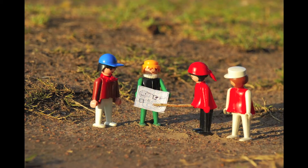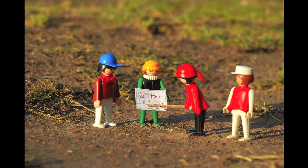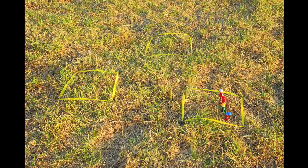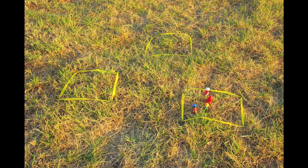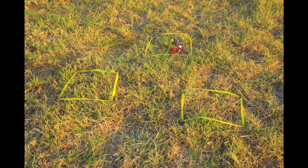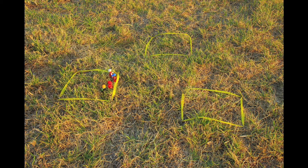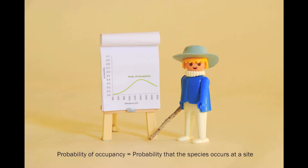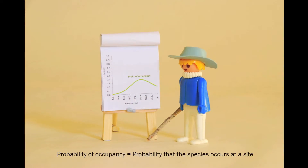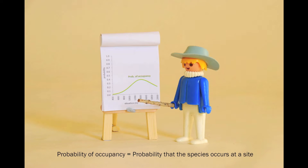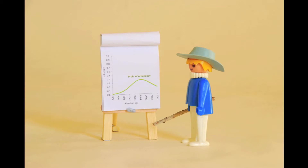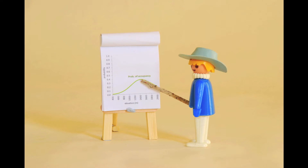We planned surveys carefully, visited a set of sites randomly selected across the region, and recorded whether wild horses were detected or not. The SDM resulting from modeling this presence-absence data indicated a clear preference for high elevation grasslands.